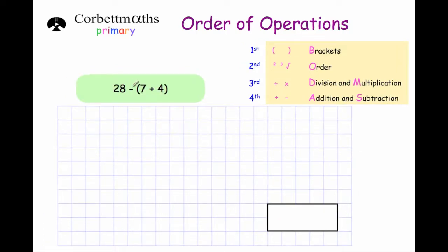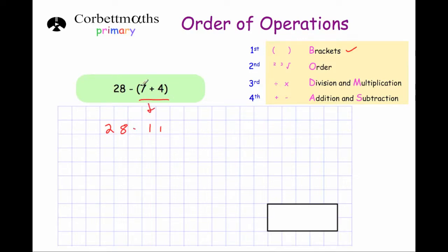Our next question is 20 minus (7 plus 4). This question does have a bracket, so we're going to work out the inside of the bracket first. 7 plus 4 is 11. Then we write down the rest of the sum: 28 minus 11. 28 take away 11 is 17, so the answer is 17.